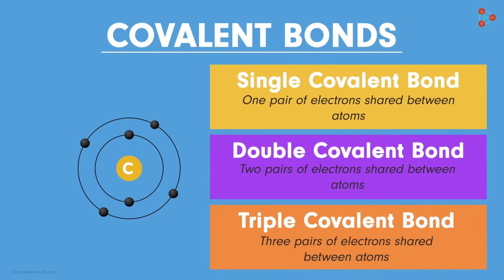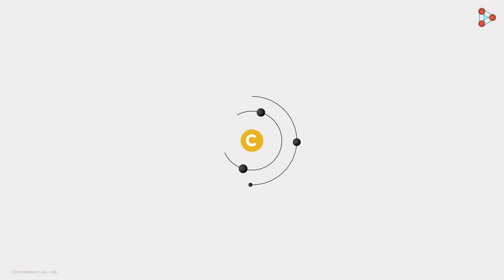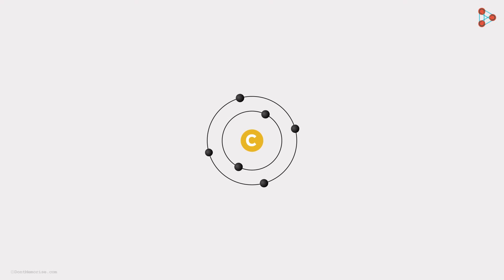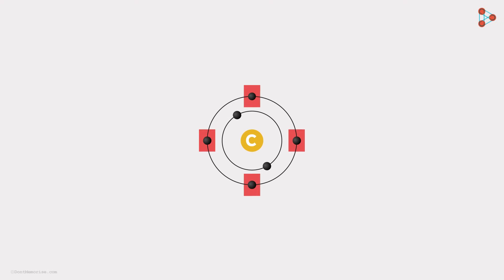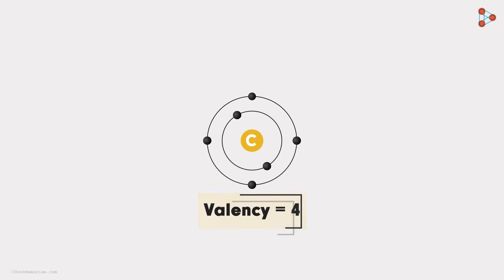Let's begin with understanding the simple structure of a carbon atom first. As we know, it has 4 valence electrons. That means sharing of all 4 electrons is possible. Thus, the valency of carbon is the most important factor for its amazing capacity to form bonds.